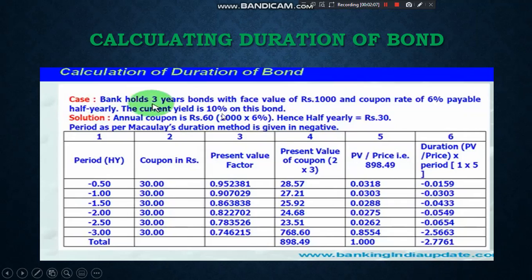Annual coupon is 60 rupees (6% of 1000), but since we are doing semi-annual, it becomes 30 rupees each period. The periods are: 0.5, 1, 1.5, 2, 2.5, and 3 years — so six periods in total. You receive 30 rupees every six months. We then look at the present value factors at 10% for each of these half-year periods to get the present values of each cash flow.